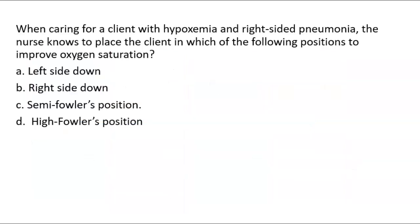Consider this question: when caring for a client with hypoxemia and right-sided pneumonia, the nurse knows to place the client in which position to improve oxygen saturation? Options are left side down, right side down, semi-Fowler's, or high Fowler's. If they have right-sided pneumonia, you want to put them left side down — we increase blood flow by laying on the unaffected side. Good lung down is the answer.